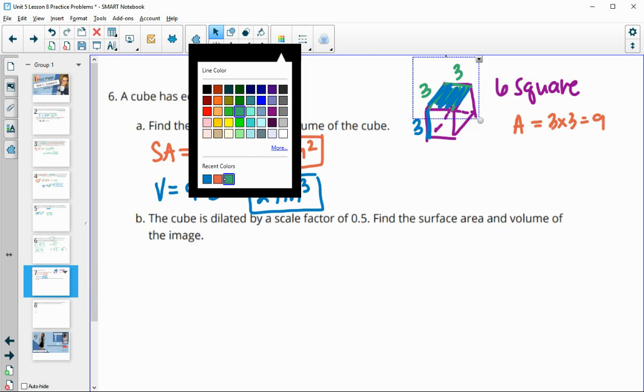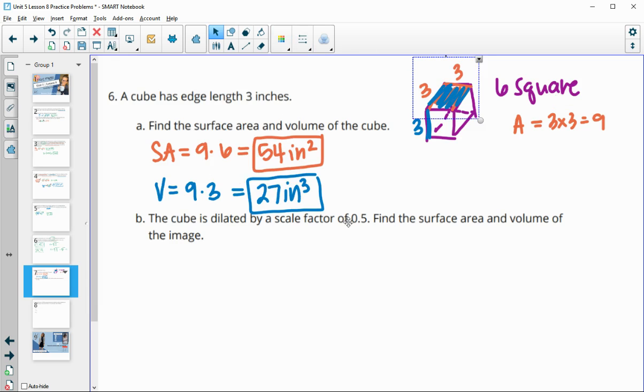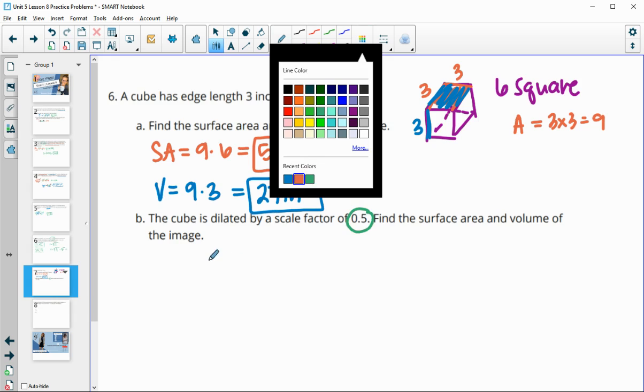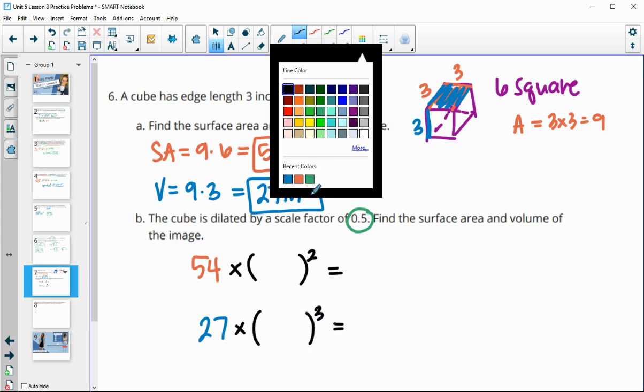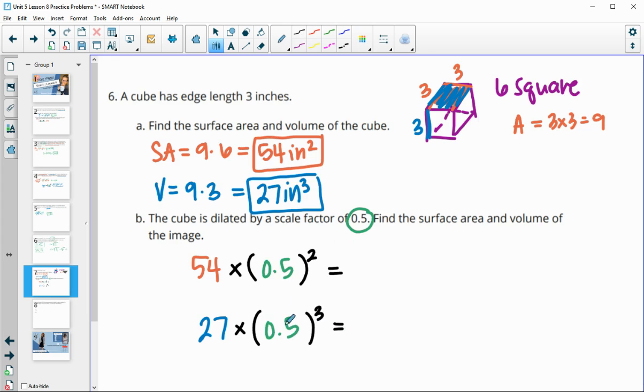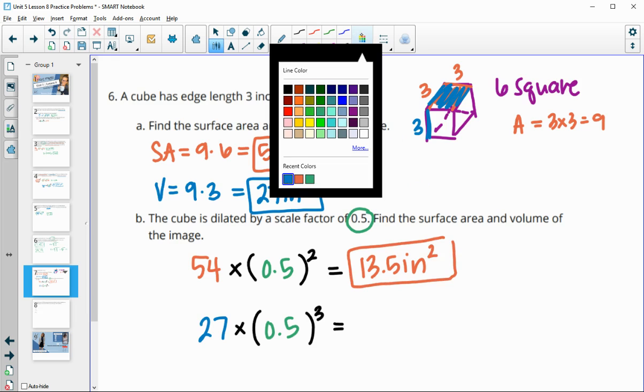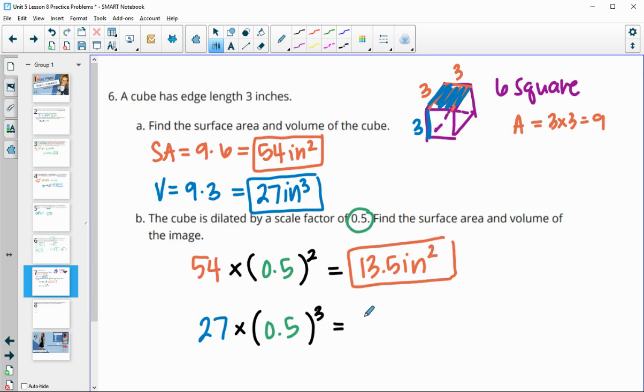We've dilated the cube by a scale factor of one half. Find the surface area and volume now. We've got our original surface area is 54, and we're going to multiply that by our scale factor squared since it's area. For the volume, we multiply volume by the scale factor cubed. Our scale factor is 0.5. When we do 54 times 0.5 squared, we get 13.5 inches squared for our new surface area. And when we do 27 times 0.5 cubed, we get 3.375 inches cubed for our new volume.